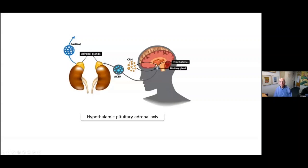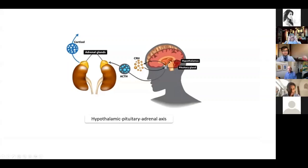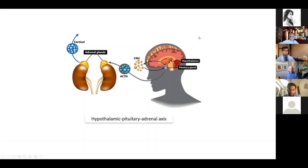The major central organizer of the stress response is the paraventricular nucleus in the hypothalamus. The hypothalamus secretes a peptide called corticotrophin releasing hormone (CRH), which acts on the pituitary gland. The pituitary then makes ACTH, which travels through the circulation to the adrenal glands, stimulating them to secrete cortisol.